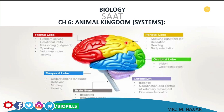The parietal lobe controls sensation, reading, and body orientation. The occipital lobe is responsible for central vision and color perception, specifically in area 17 of the occipital lobe.